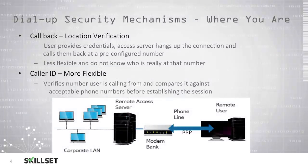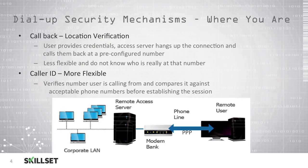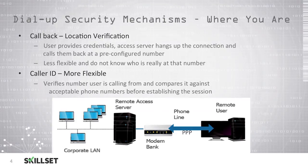There are a few security mechanisms used with dial-up networking to provide geolocation authentication. Callback was a location verification method — when an individual wanted to connect to the network, they would provide their credentials and the access server would hang up on them and call them back at a pre-configured number. This is not very flexible; if the user leaves that phone number or location, they will not be able to establish a connection.